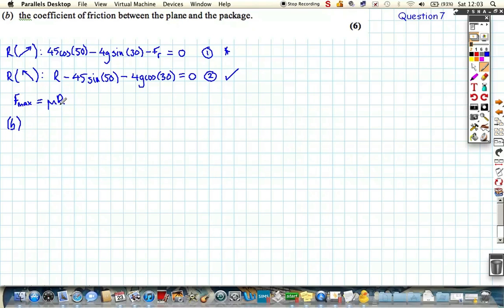So let's use equation number one. Using equation number one, the friction is equal to 45 cosine 50—again, take a little while just to check that you understand what I've done with the algebra—minus 4g sine 30.